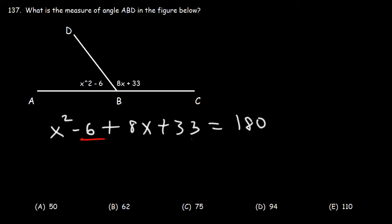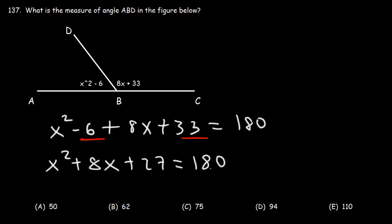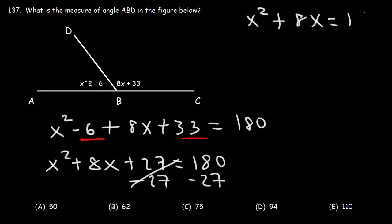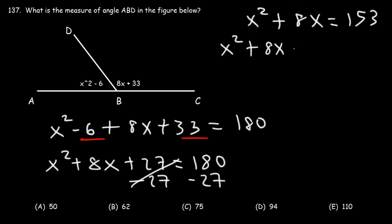Combining like terms: negative 6 plus 33 is positive 27. Subtracting 27 from both sides: 180 minus 27 is 153. So we have x² plus 8x equals 153. Moving 153 to the left side gives x² plus 8x minus 153 equals 0.